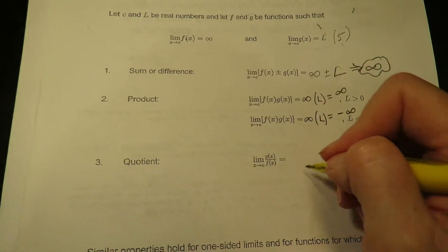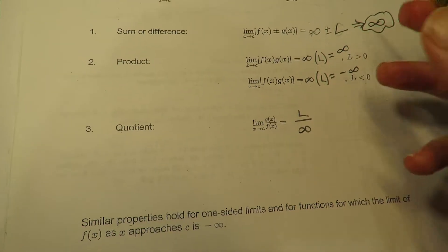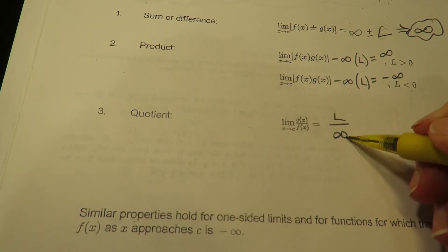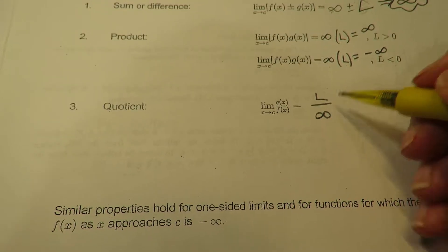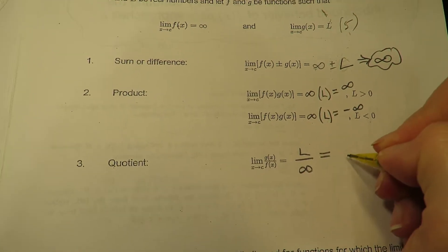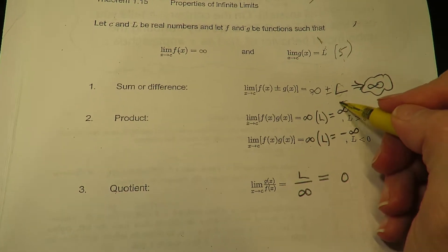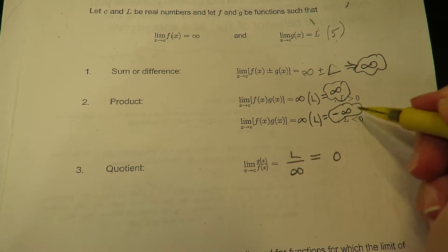And the last one, and you guys have done this, so this is nothing new. If you have a fixed number over infinity, like 5 over infinity, you're sharing $5 with everybody in the world, that's going to approach 0. So those are just some basic concepts, you've actually seen them before.